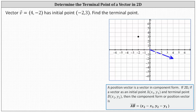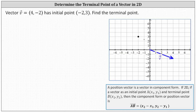Here we have vector v in standard position where the initial point is at the origin, the x component is four and the y component is negative two. And now we want to find the equivalent vector with initial point at negative two comma three, which is this point here. We'll call this point A.